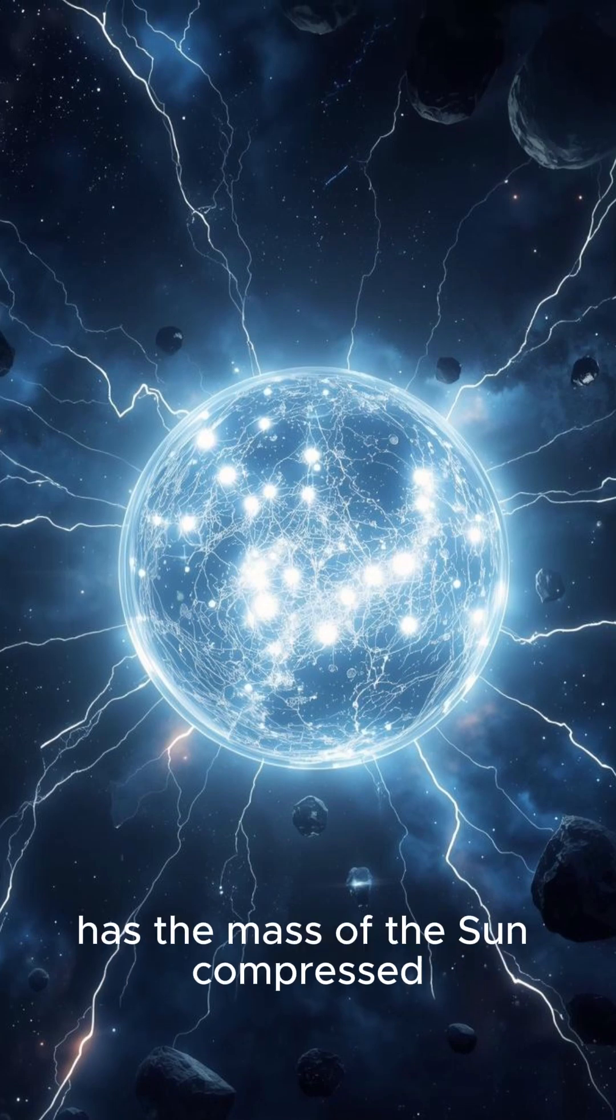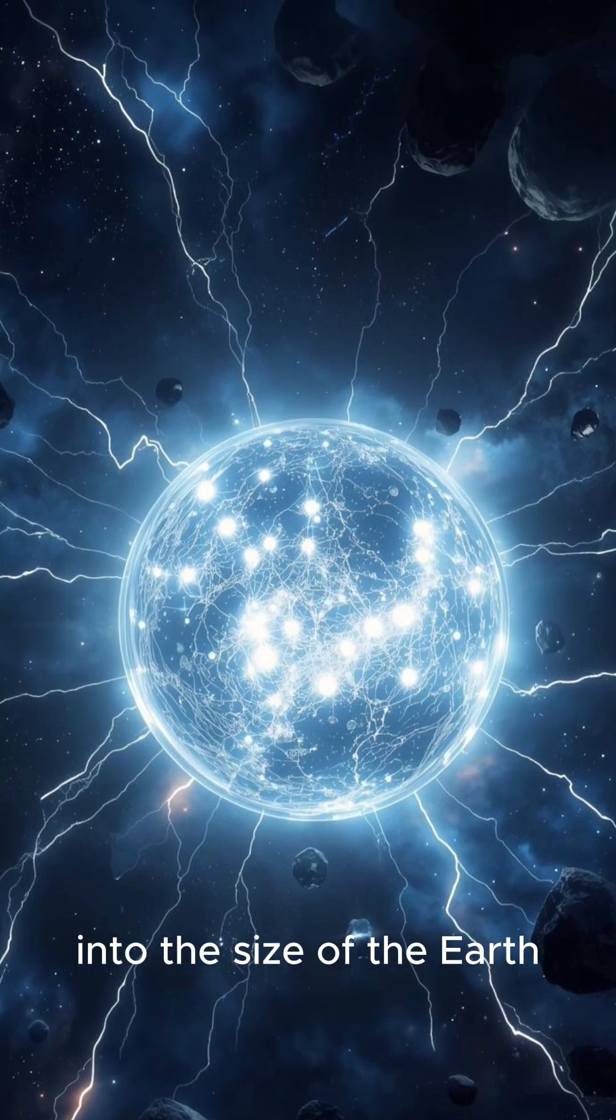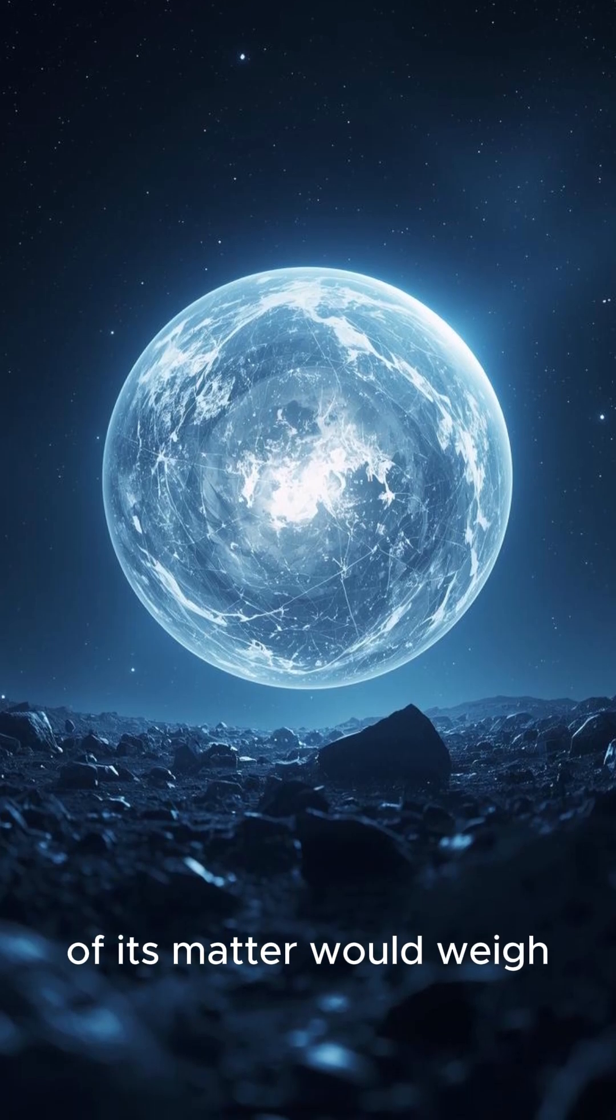First is, a white dwarf has the mass of the Sun compressed into the size of the Earth. A single teaspoon of its matter would weigh over five tons.